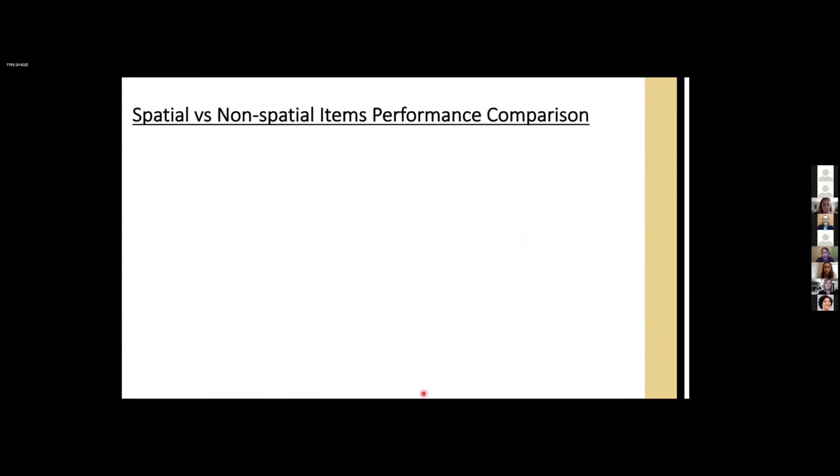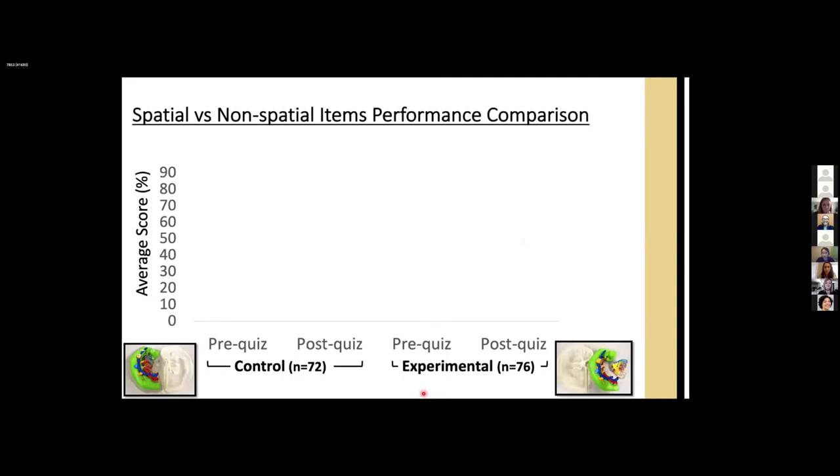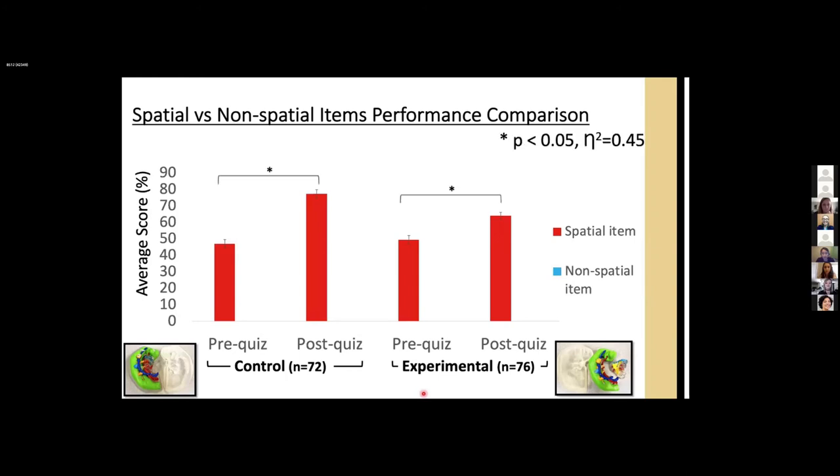Furthermore, we performed item analysis. In both pre-quiz and post-quiz, we had spatial items and non-spatial items. So spatial items tested the embryonic structures, organs, their spatial relations to each other, and non-spatial items tested more lecture-based contents. So for spatial items, both control and experimental groups, post-quiz performance enhanced significantly with an effect size of 0.45.